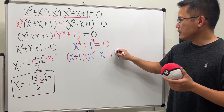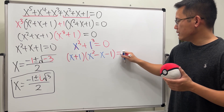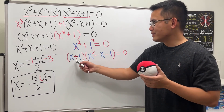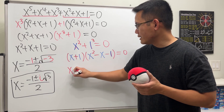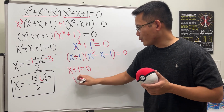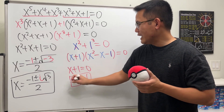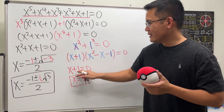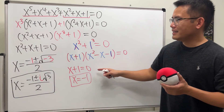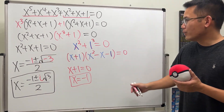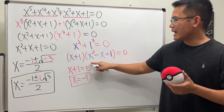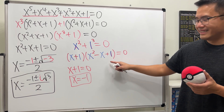That gives us x plus one times x squared minus x plus one, all equal to zero. Setting x plus one equal to zero gives x equals negative one. Actually, sorry — the factoring should have a plus sign in the second factor. So the correct factorization is x plus one times x squared minus x plus one.